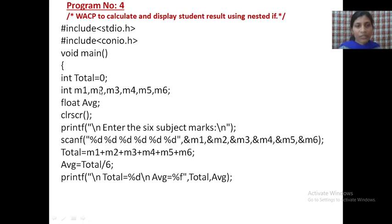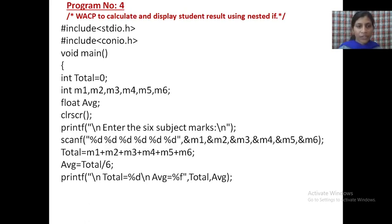Then float average. Why have I used float for average? Because average is always a fraction value. For example, if you calculated your percentage, it always comes in fraction values: 90.85%, 50.60%. So use float here, because average or percentage comes in fraction values. Use float average.